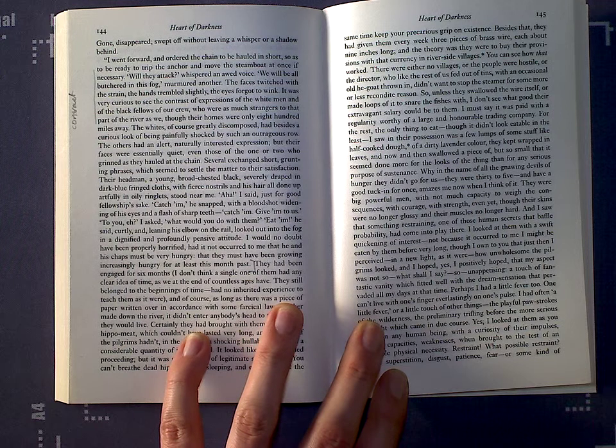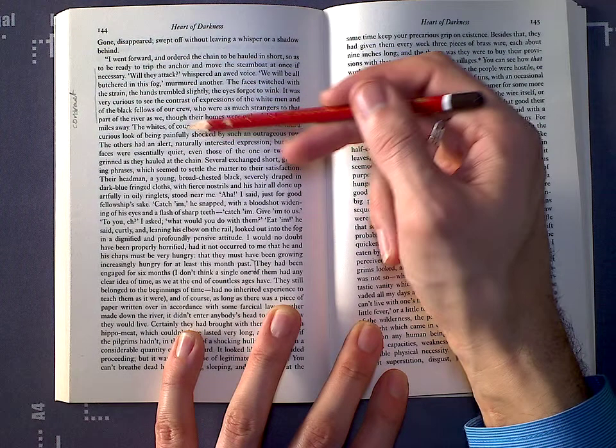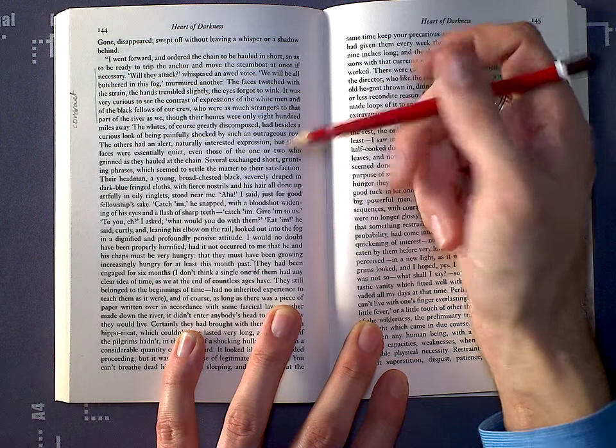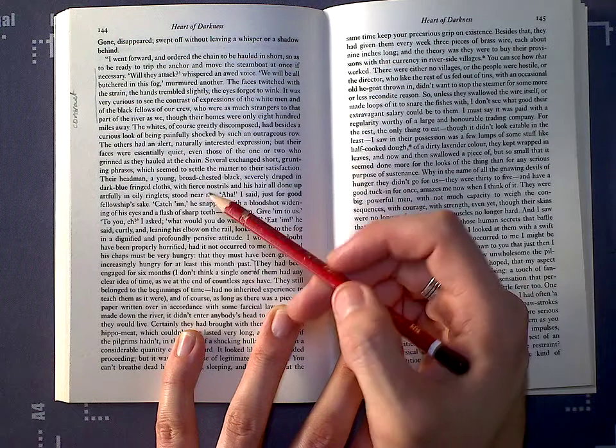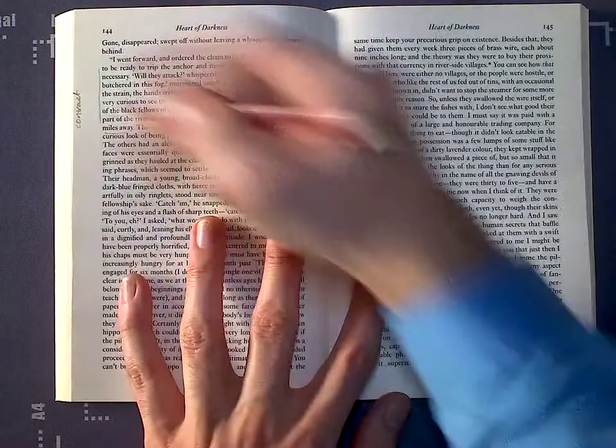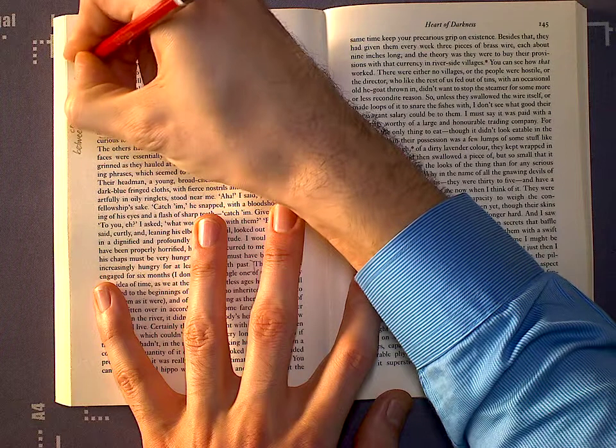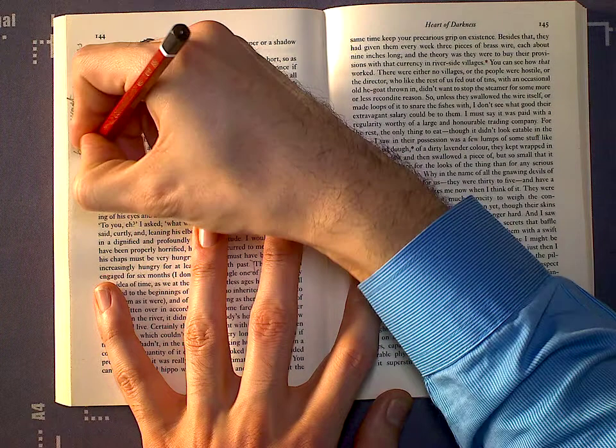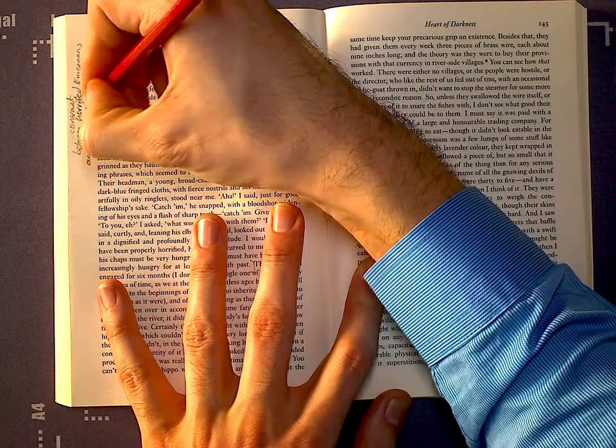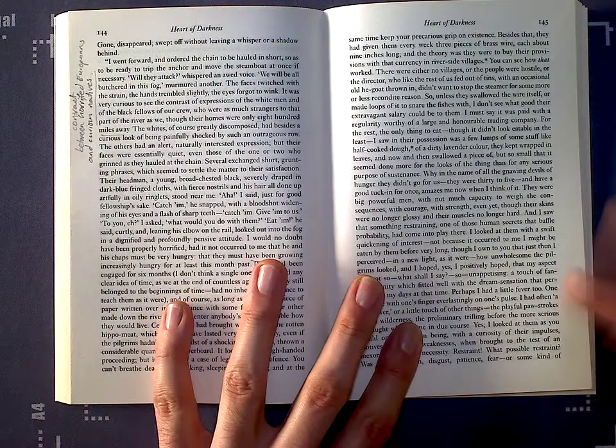So, that's already a real clear distinction between how people view others because for the native crew that are on board, this is not their area of origin. They wouldn't have belonged to this place. Even though they're not as further away as the Europeans, they're still, what is it, 800 miles. So, they're not from around here. But, there is a contrast between horrified Europeans and curious natives. Curious natives who are looking at it and Marlow is picking up on this distinction.